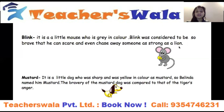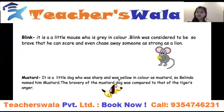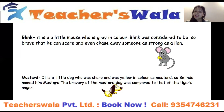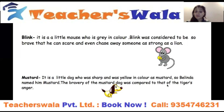So we know about three characters: Belinda, who is very powerful and brave, and Ink and Blink, all of whom are very strong. Now let's read about Mustard. Mustard is a little dog who is sharp and yellow in color — the color of mustard. Belinda named him Mustard because of his color. The bravery of the Mustard dog was compared to that of a tiger's anger — he is so strong and powerful that he's compared to a tiger's fury. All the characters we have read about so far are very powerful, very courageous, and very brave.